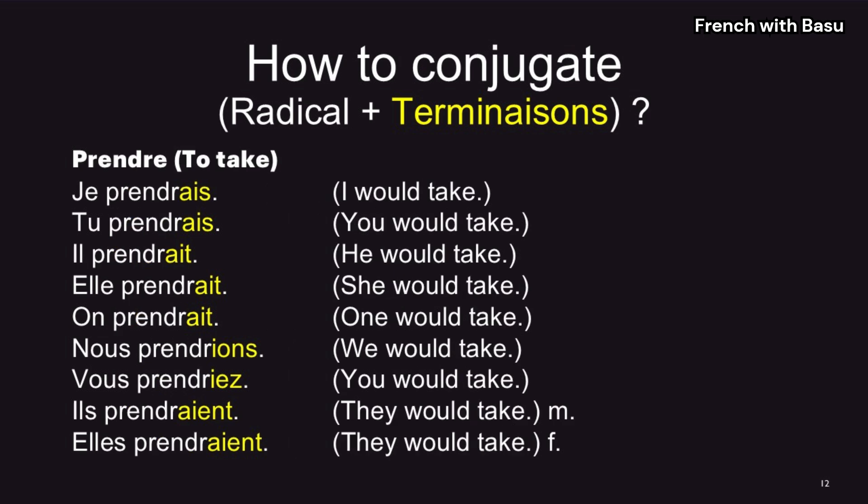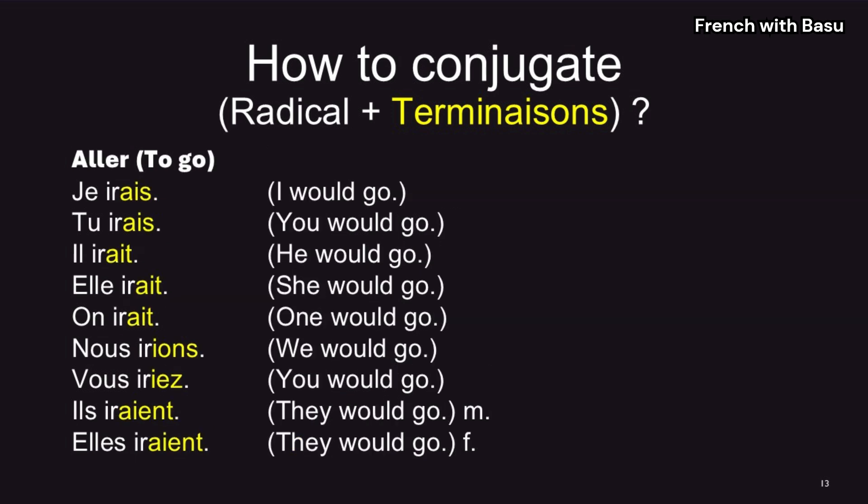Prendre: in the radical, I have removed the final e, giving prendr. Then the terminaisons: -ais, -ais, -ait, -ait, etc. Je prendrais, tu prendrais, il prendrait, elle prendrait, nous prendrions, vous prendriez, ils prendraient, elles prendraient. For aller from the third group, ir is the radical. J'irais, tu irais, il irait, elle irait, nous irions, vous iriez, ils iraient, elles iraient. The meanings are on the screen.